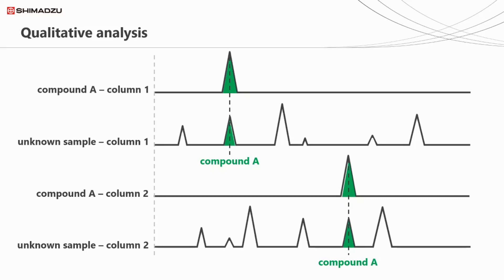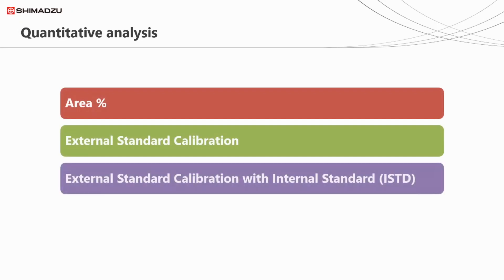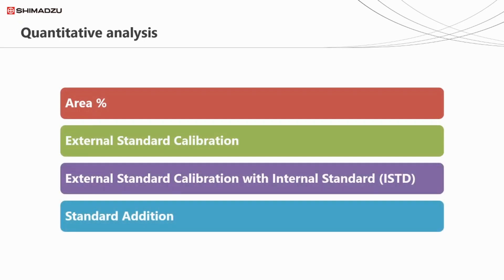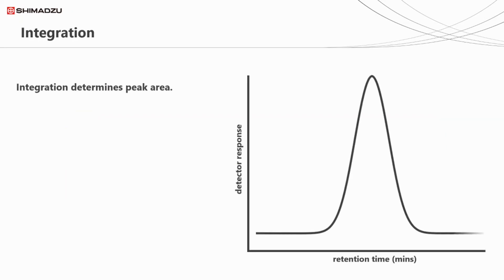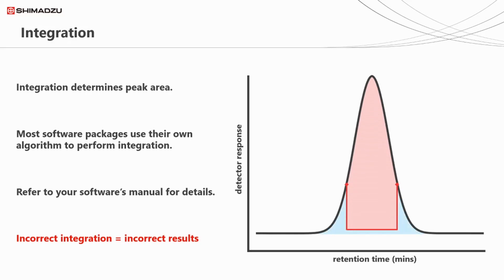But despite all of this, we can't yet provide any information on how much of compound A is present. To do this, we need to perform quantitative analysis on our sample. There are a number of ways in which we can quantify what's in our sample, and we're going to look at each of these four options. One thing they all have in common is that they all rely on peak integration to determine the peak area. It's essential that you set the correct parameters to ensure your integration is correct — if your integration is incorrect, your results will also be incorrect. If you put rubbish in, you get rubbish out.